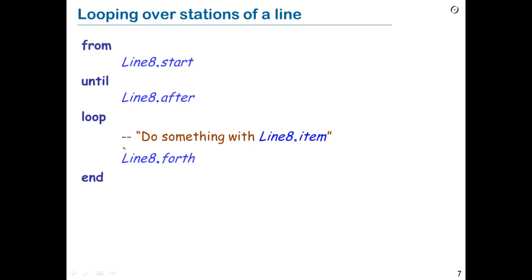We'll see in just a minute another slightly different form of the loop which protects you from having to think about this problem explicitly. Let's read the loop as if it were English text: from line_eight.start, until the exit condition line_eight.after, loop — repeat the following instructions: do something like outputting the name with line_eight.item, the current element of the line, and then advance to the next with line_eight.forth.